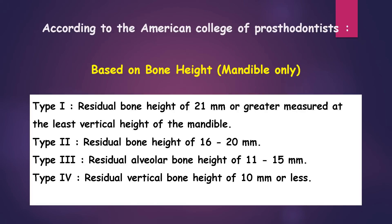According to the American College of Prosthodontists, classification is based on bone height in the mandible. The mandibular bone height is the only determinant for this classification, divided into 4 types. Type 1: residual bone height of 21 mm or greater measured at the least vertical height of the mandible. Type 2: residual bone height of 16 to 20 mm. Type 3: residual alveolar bone height of 11 to 15 mm. And Type 4: residual vertical bone height of 10 mm or less.